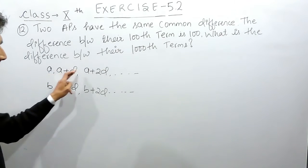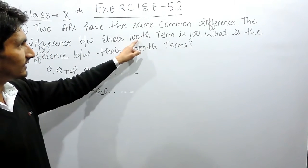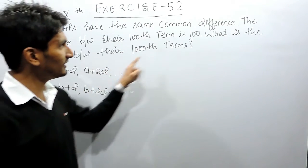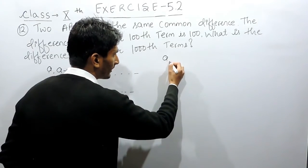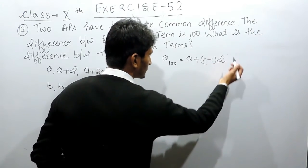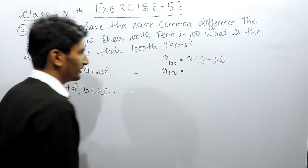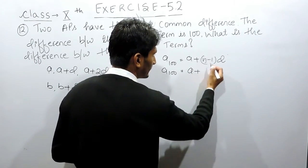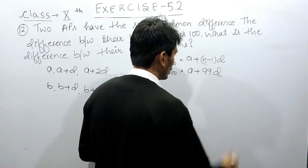There will be many terms in these APs. The hundredth term of the first AP and the hundredth term of the second AP — the difference between these two is 100. To find the hundredth term we use the formula: first term plus (n minus 1) times D. For the first AP, the first term is A, n is 100, so it becomes A plus 99D.